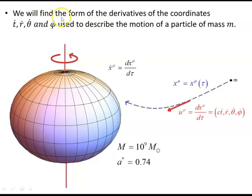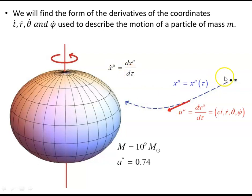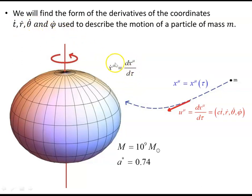We're going to find the form of the derivatives of the coordinates t dot, r dot, theta dot, and phi dot under a strict set of circumstances, and use them to describe the motion of a particle of mass m. Because we're working with a particle of mass m, we'll parameterize the path by its proper time tau. This particle will be restricted to the equatorial plane, which simplifies the derivatives of t, r, theta, and phi with respect to tau.